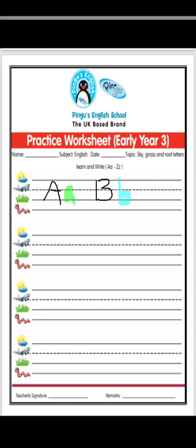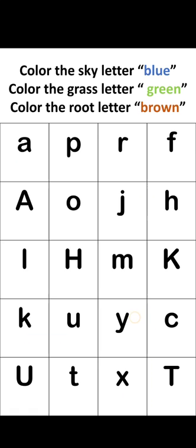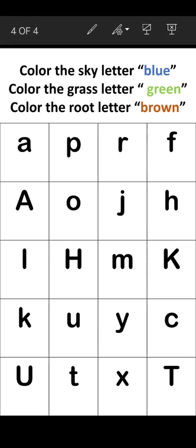Now let's come to another worksheet. In this worksheet: color the Sky letter blue, color the Grass letter green, and color the Root letter brown. We have to find the Grass, Root, and Sky letters and color them according to their categories.